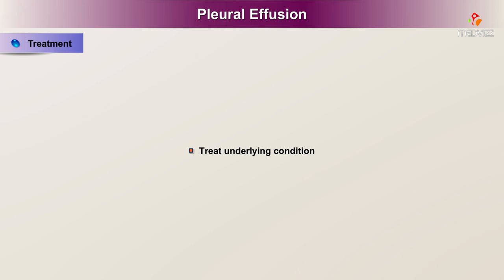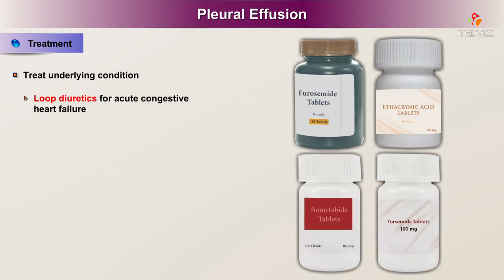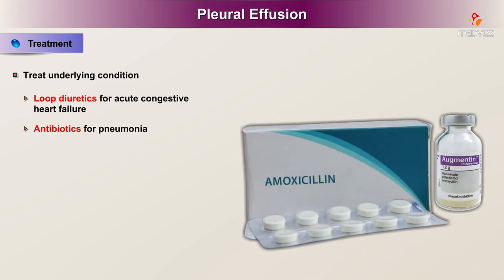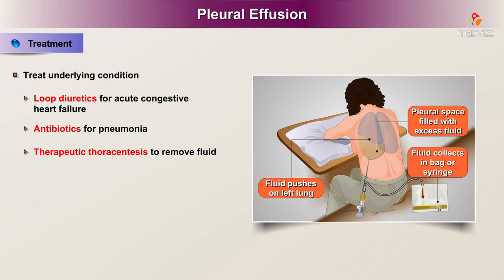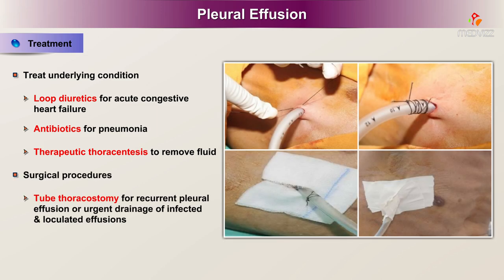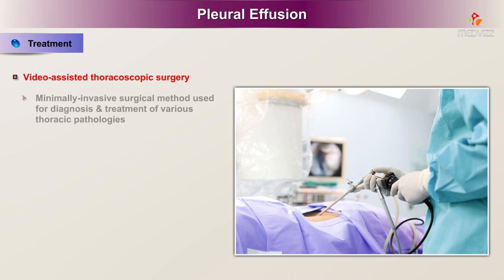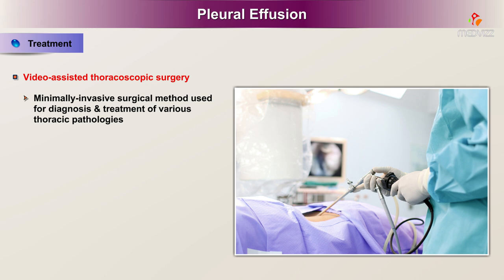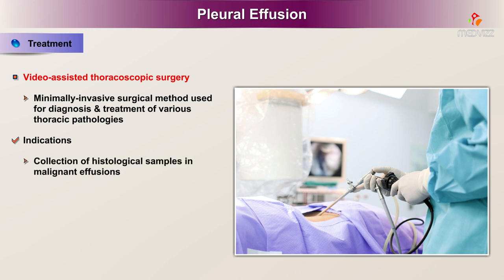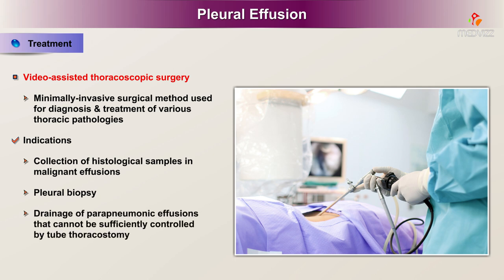Treatment involves treating the underlying condition, for example loop diuretics for acute congestive heart failure or antibiotics for pneumonia. Therapeutic thoracentesis can be performed to remove fluid. Surgical procedures include tube thoracostomy for recurrent pleural effusion or urgent drainage of infected or loculated effusions. Video-assisted thoracoscopic surgery (VATS) is a minimally invasive surgical method used for diagnosis and treatment of various thoracic pathologies. Indications include collection of histologic samples in malignant effusions, pleural biopsy, and drainage of parapneumonic effusions that cannot be sufficiently controlled by tube thoracostomy, as well as drainage of pleural empyema.